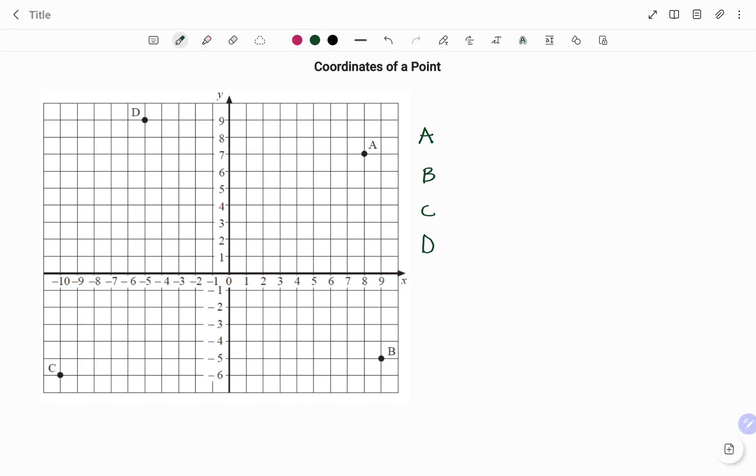A Cartesian plane in math is defined as a two-dimensional coordinate plane which is formed by the intersection of the x and y axis. The x axis, as shown, is your horizontal line while your y axis is your vertical line.